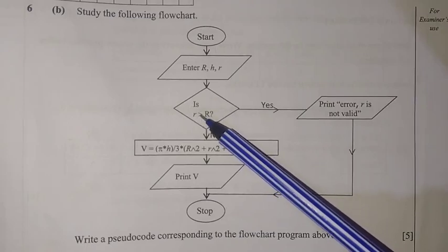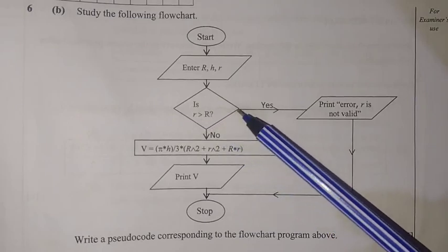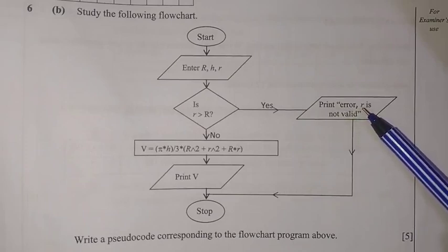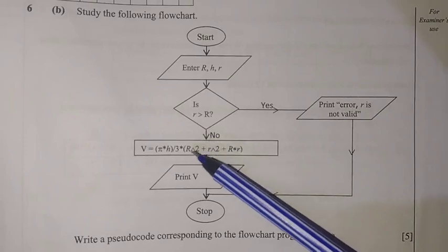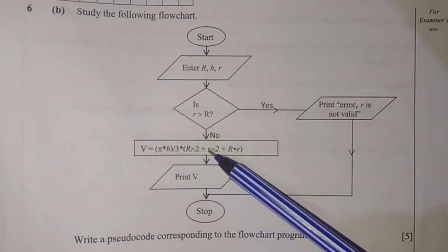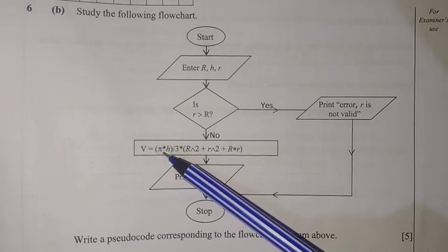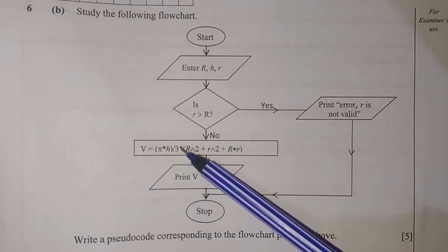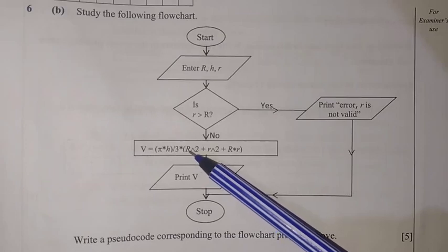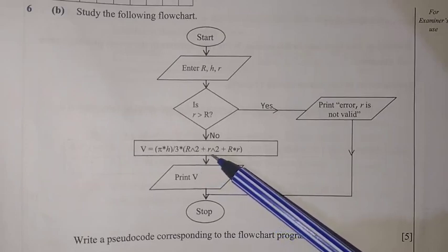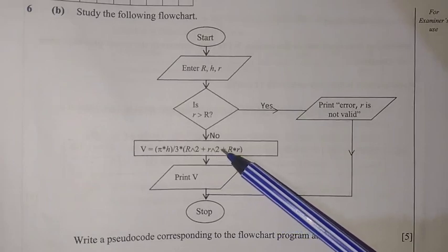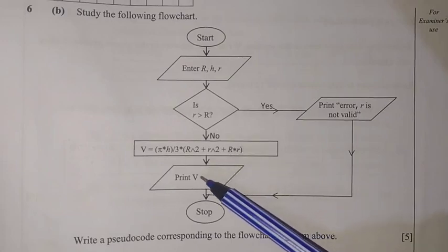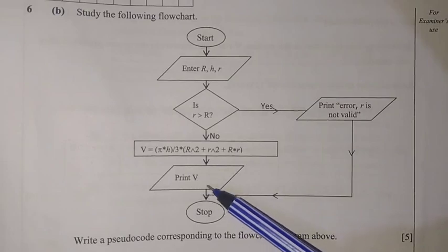Then we have the decision box: is the small radius greater than the bigger radius? If yes, we print an error message showing that the small radius is not valid. If no, we show the action: volume equals pi times height divided by three, times the bracket: R squared plus r squared plus R times r, close bracket.